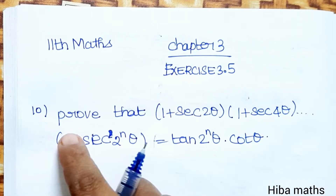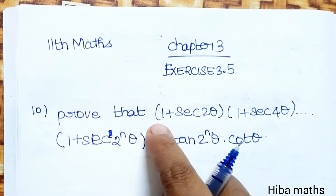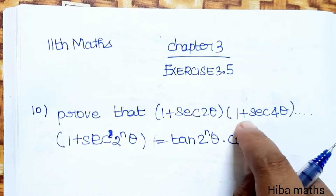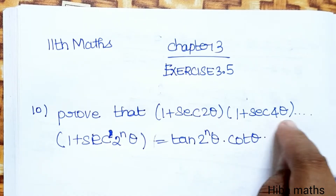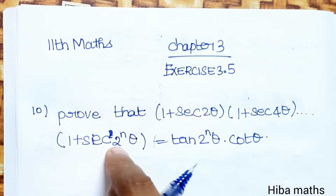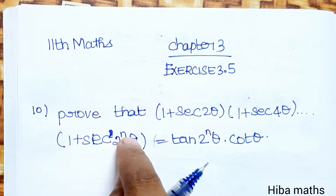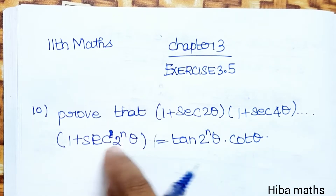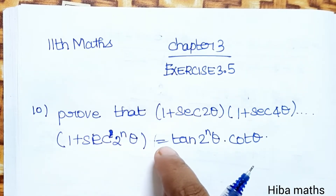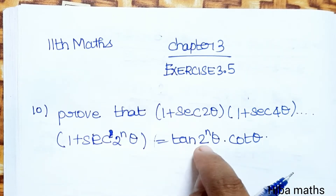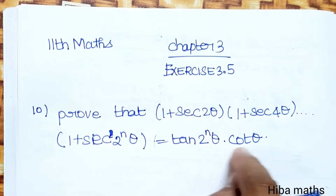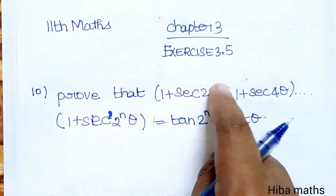10th question: prove that (1 + sec2θ)(1 + sec4θ)(1 + sec2²θ)... up to n terms equals tan(2ⁿθ) · cotθ.